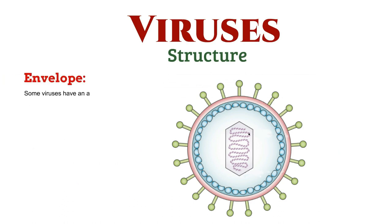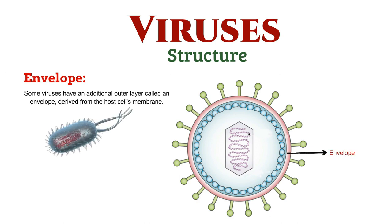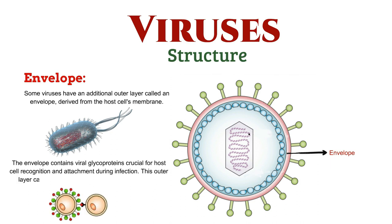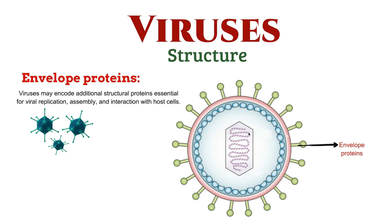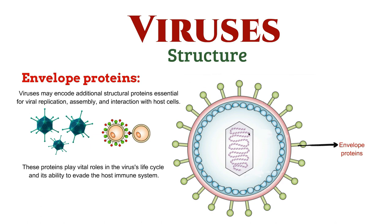Some viruses have an additional outer layer called an envelope, derived from the host cell's membrane. The envelope contains viral glycoproteins crucial for host cell recognition and attachment during infection. This outer layer can influence the virus's stability and infectivity. Viruses may also encode additional structural proteins essential for viral replication, assembly, and interaction with host cells, playing vital roles in the virus's life cycle and its ability to evade the host immune system.